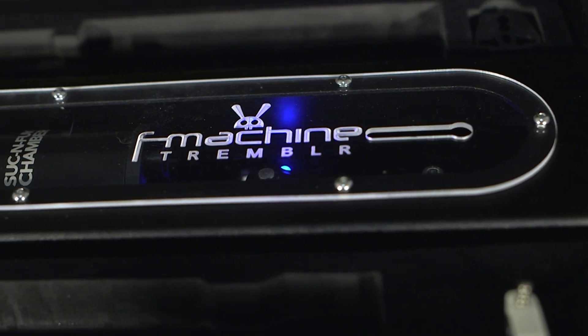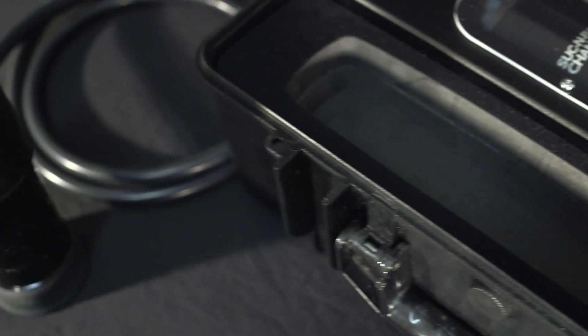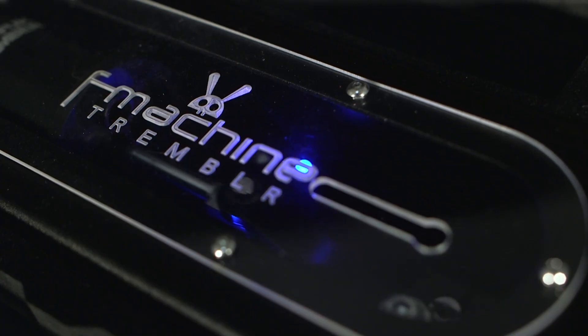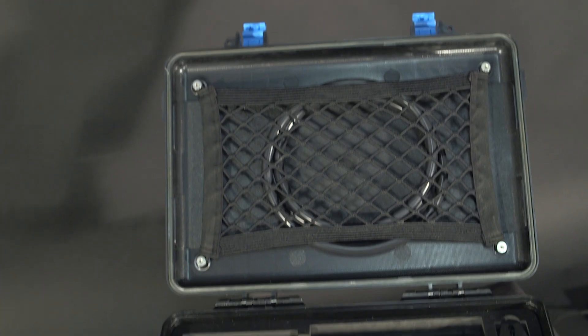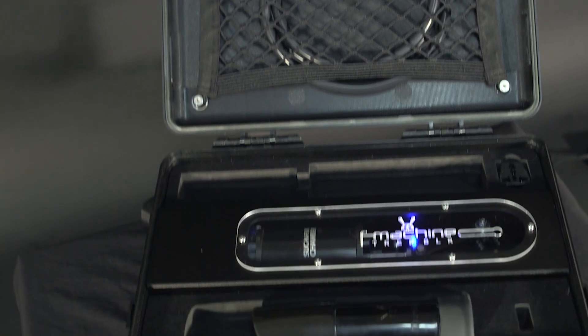Congratulations on your new purchase. The F-Machine Trembler is one of the most sophisticated masturbation devices on the planet. You're going to have a lot of fun using your Trembler, but before you can start to use your machine, you need to set up the receiver so it's personal to you.